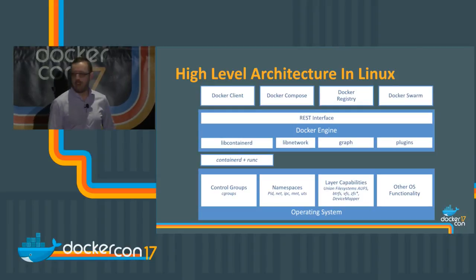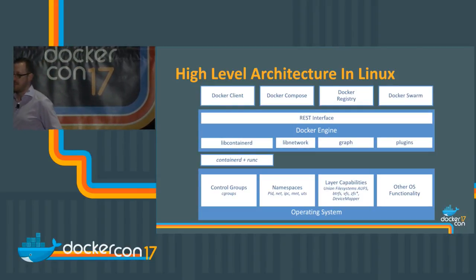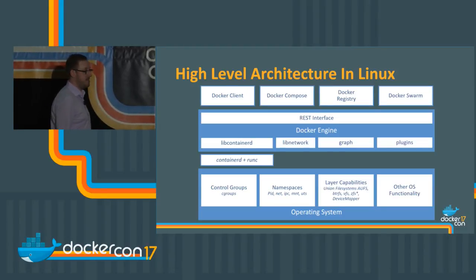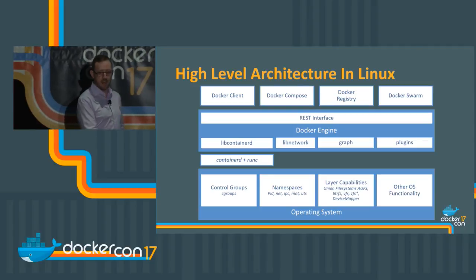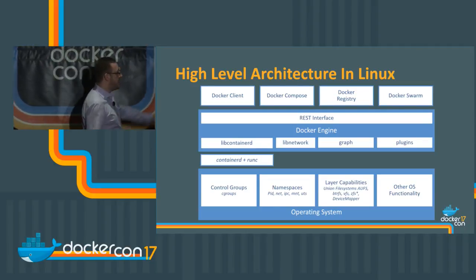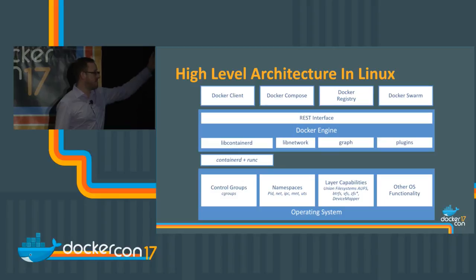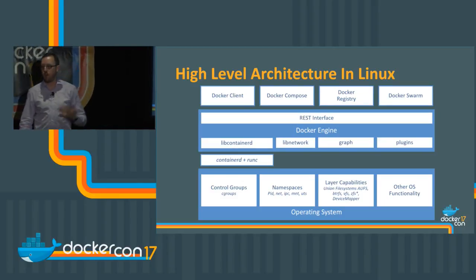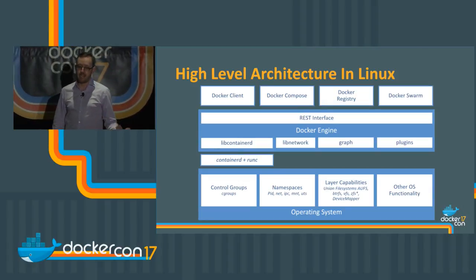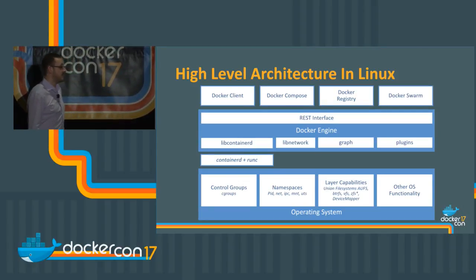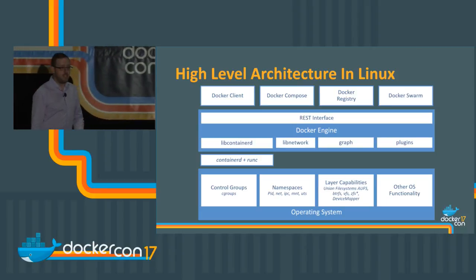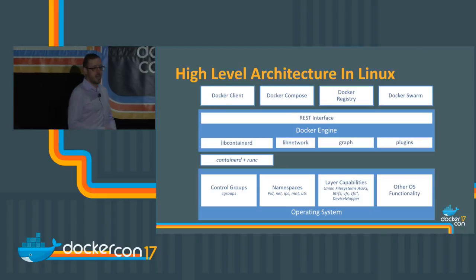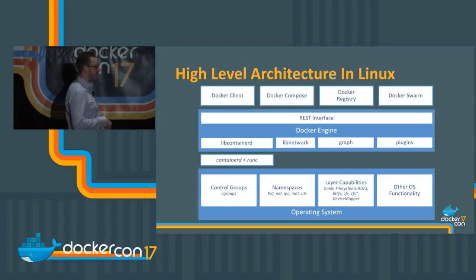It wouldn't be a talk without a block diagram, so we've got a few of them. This is the high-level architecture in Linux. In the operating system we have things like control groups and namespaces, layered file systems, and other OS functionality that containerd and the Docker engine, or runc, talk to. The Docker engine layers on top of that, with its own set of functionality, a REST interface on top, and then clients on top of that.